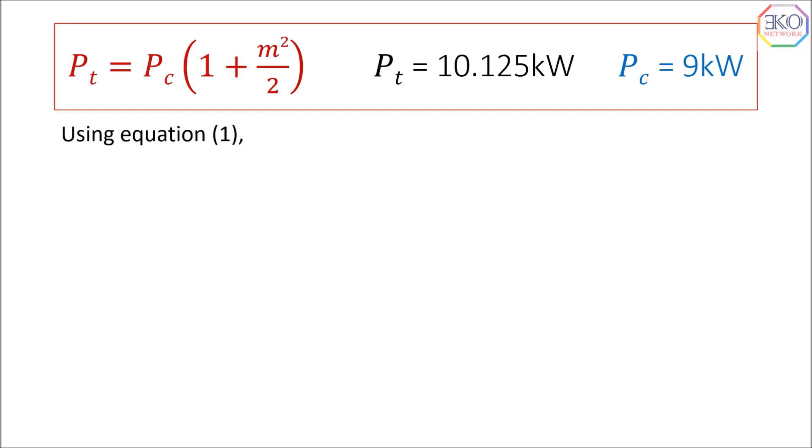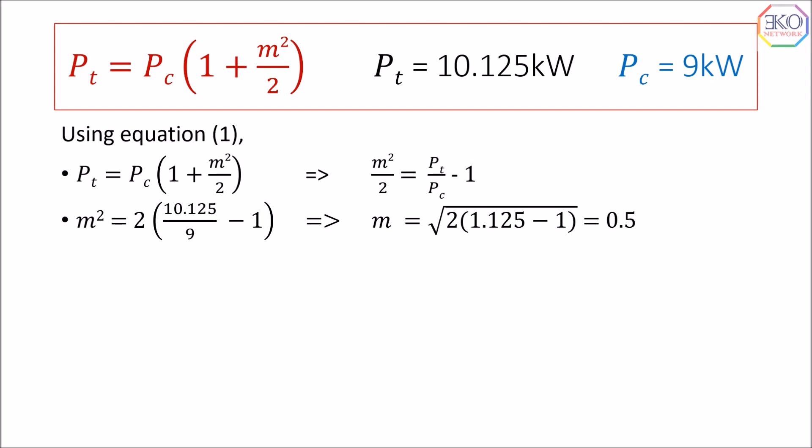Using equation 1, we have m²/2 = Pt/Pc − 1. Solving for m: m² = 2 × (Pt/Pc − 1). Substituting Pt = 10.125 kilowatt and Pc = 9 kilowatt into the formula, we get m = 0.5.